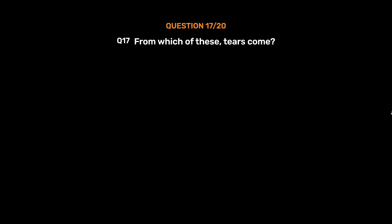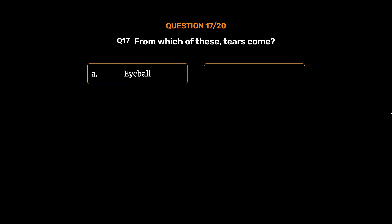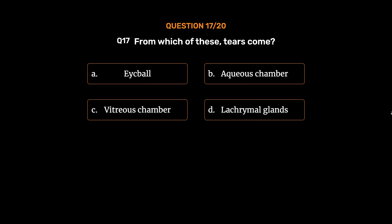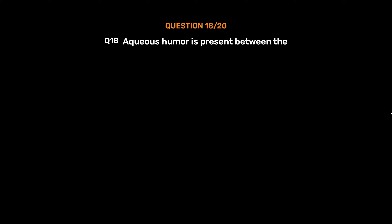Question number 17. From which of these do tears come? Option A: Eyeball. Option B: Aqueous chamber. Option C: Vitreous chamber. Option D: Lacrimal glands. The correct answer is Option D: Lacrimal glands.